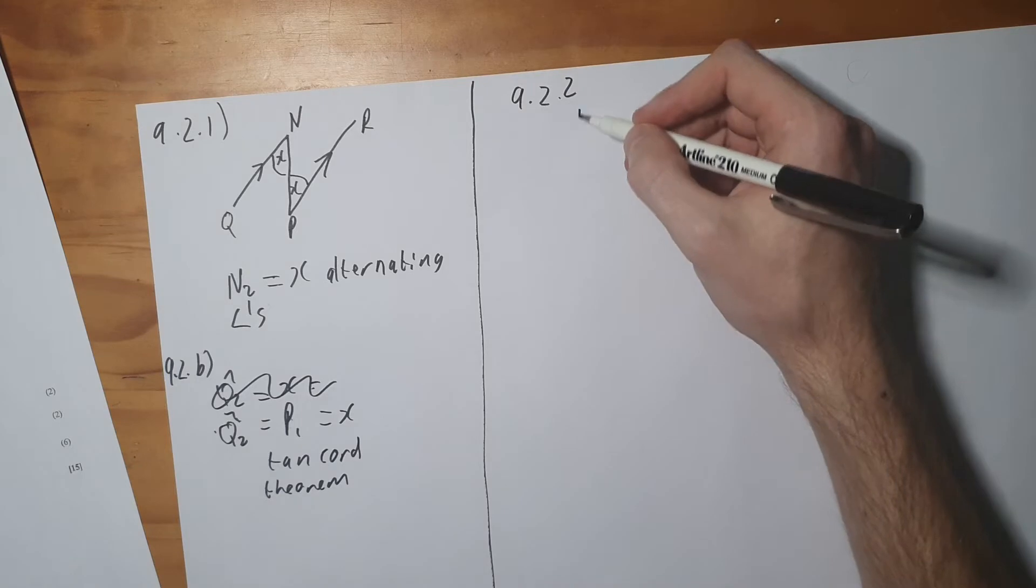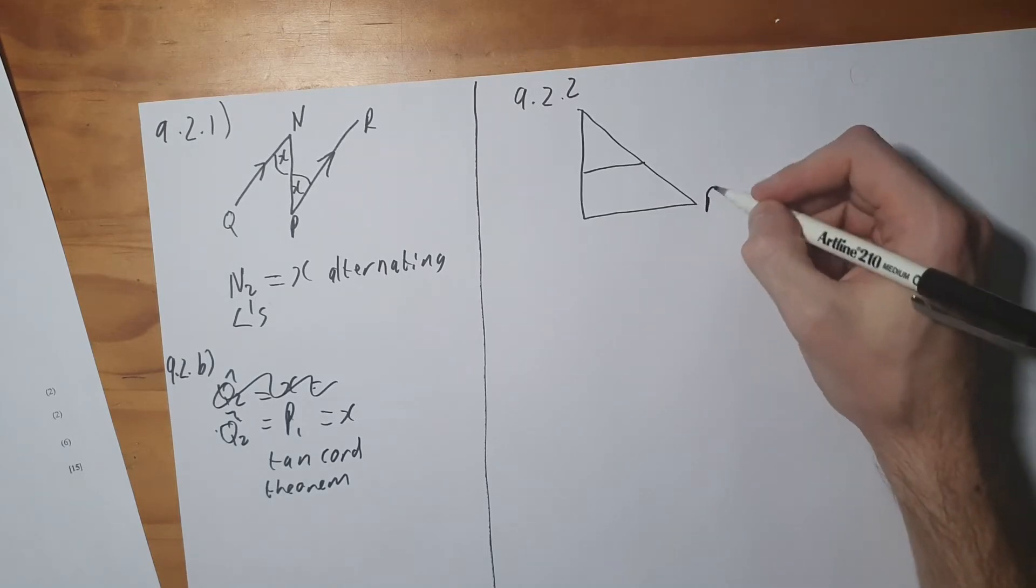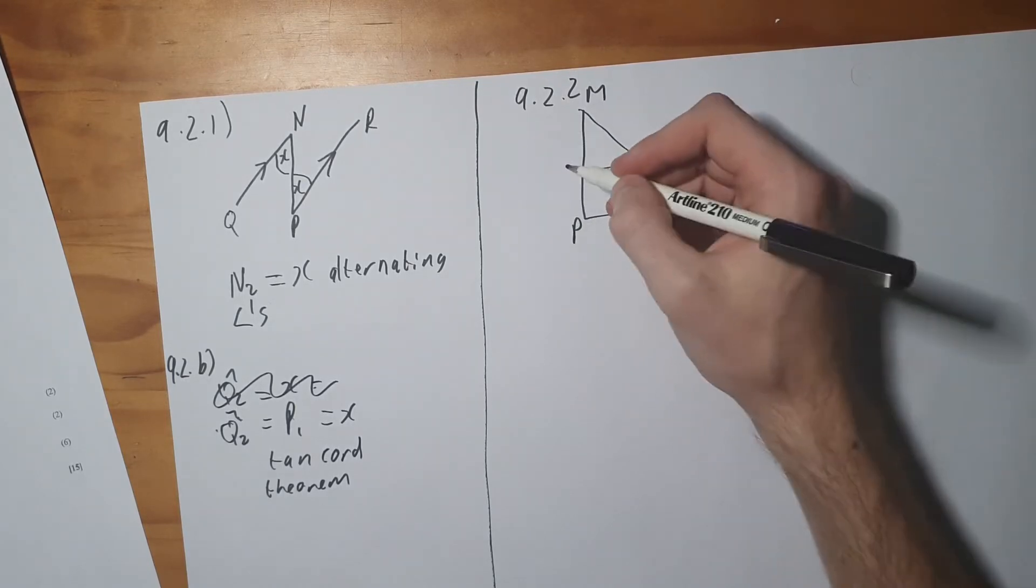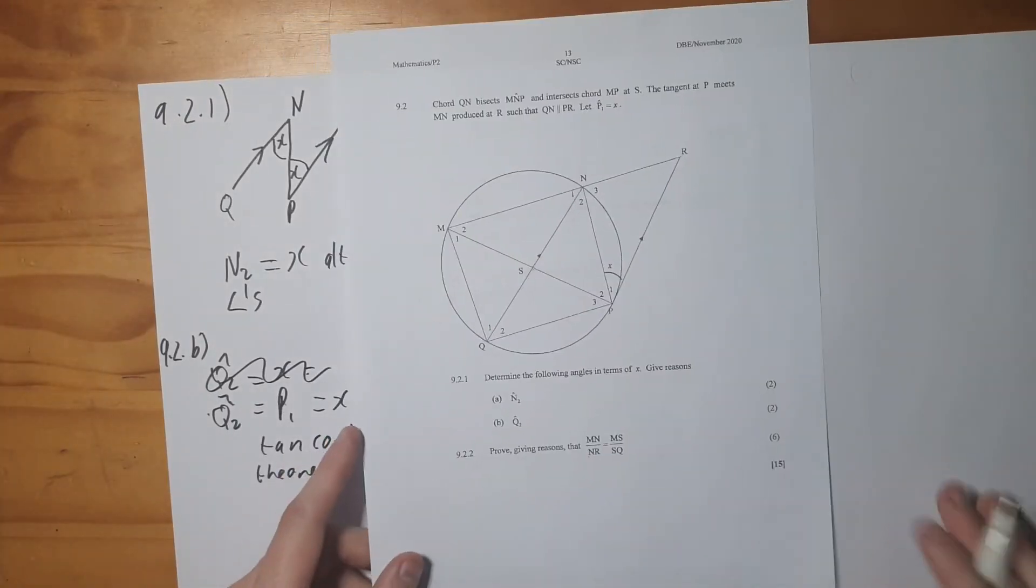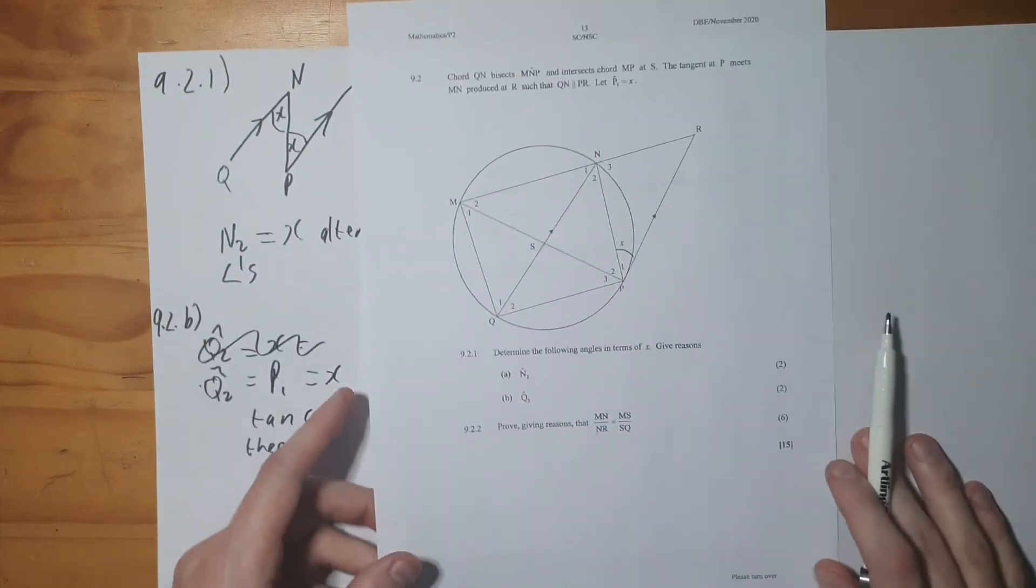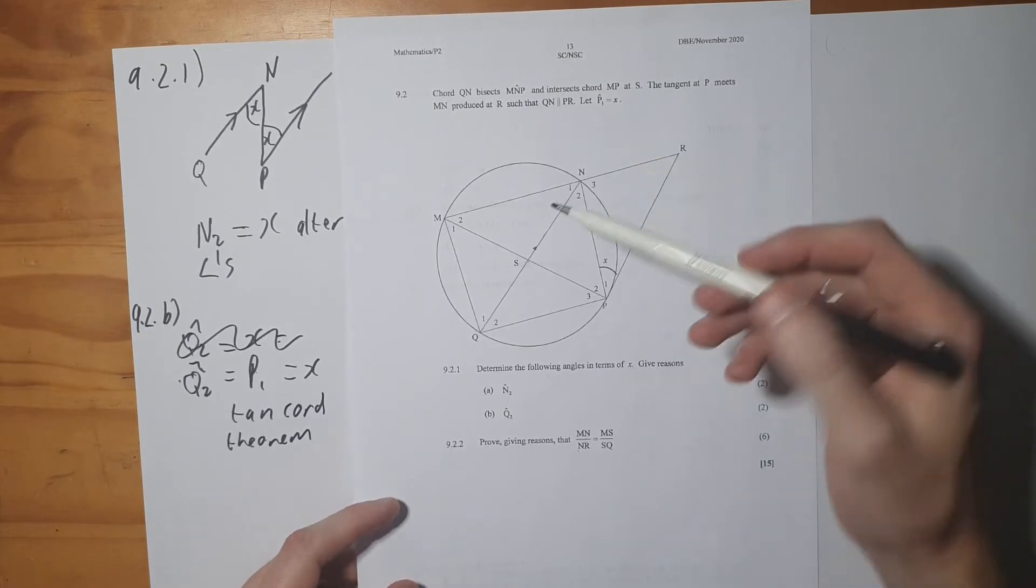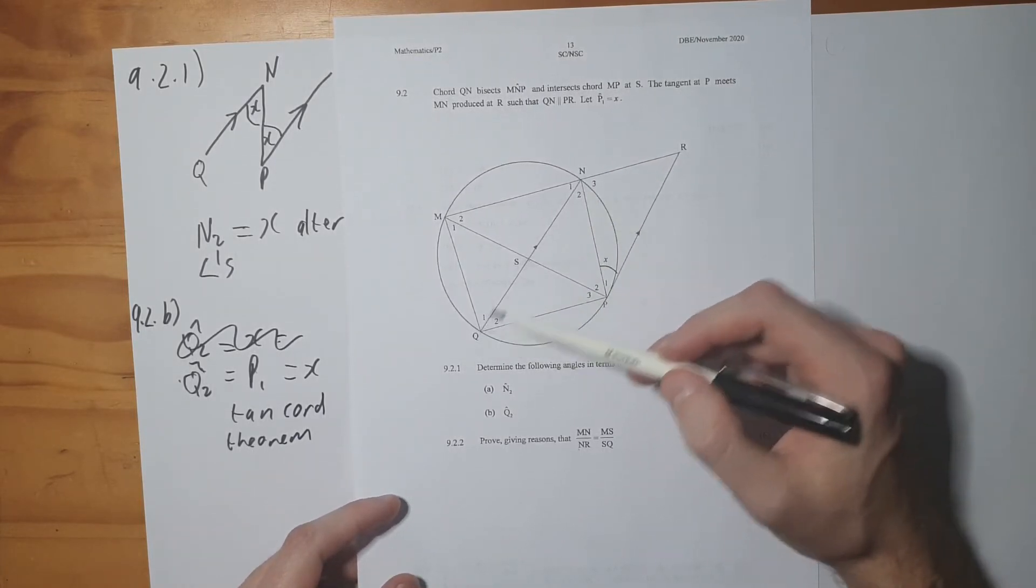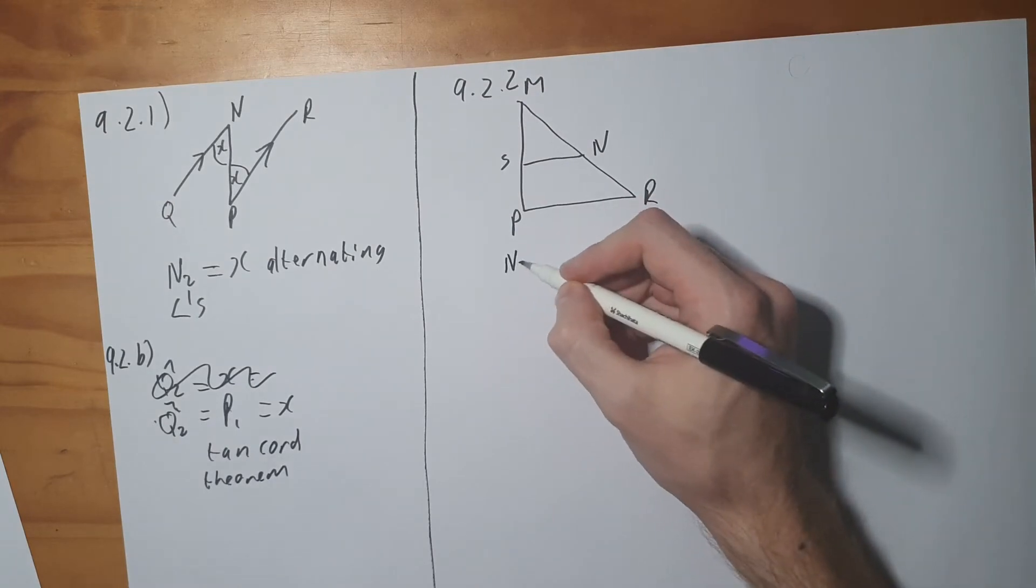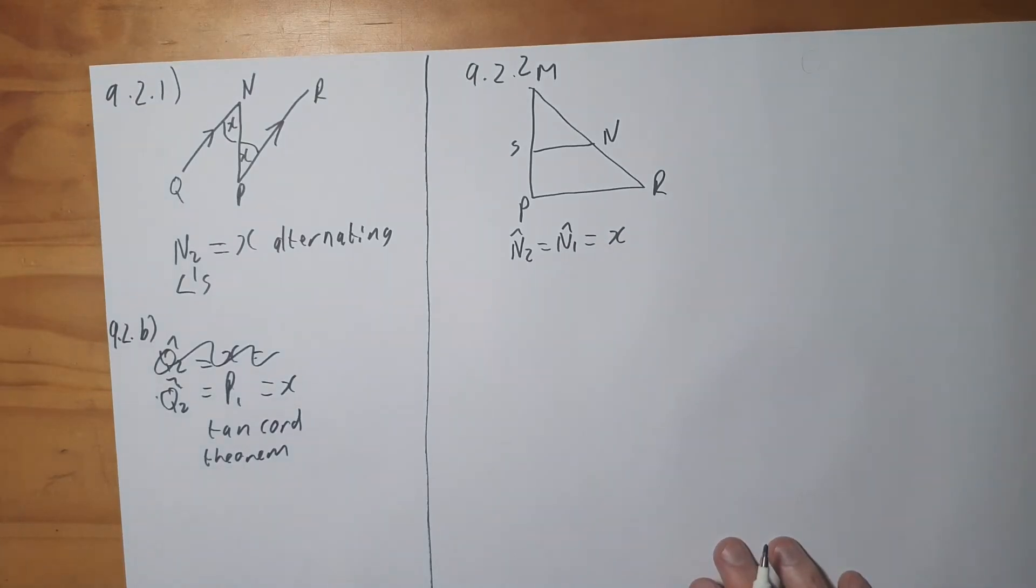So technically what we have here is 9.2.2. We're sitting with the following triangle, so this is R, this is M, this is N, this is P, and then this is S. But now they're dealing with SQ, so somehow we've got to relate SP to SQ, and then we can use midpoint theorem from our triangles in order to solve this. So, the first thing that I'm going to indicate is, because N is being bisected by this line here, bisect means cut in half, we can see N2 equals N1, which equals to X.